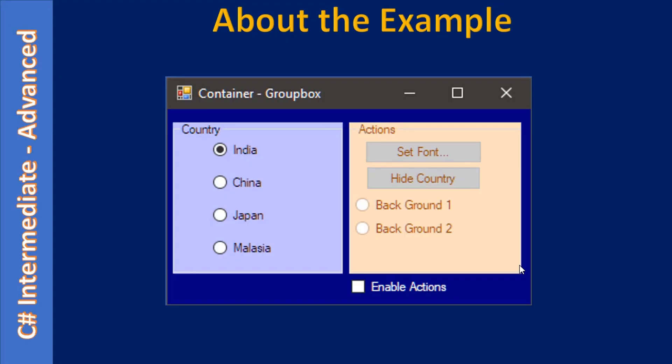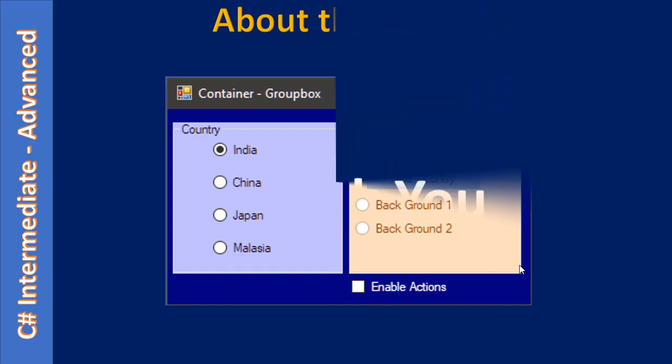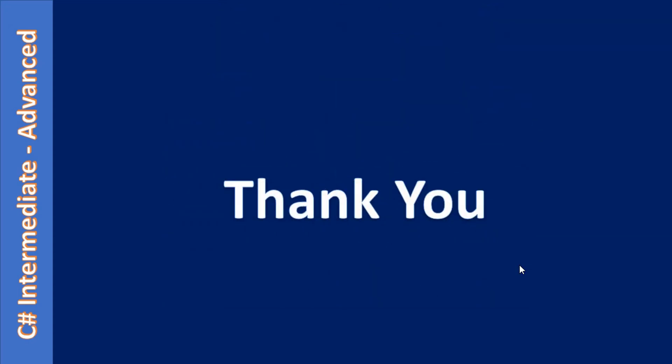We already talked about this example in the previous video. Now you have the idea of form design — how the parent container will push its property to its child controls, and how a child control can override the property inherited from its parent container. That's all here. Thank you for watching, bye.